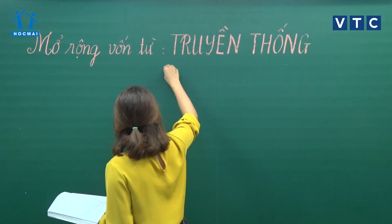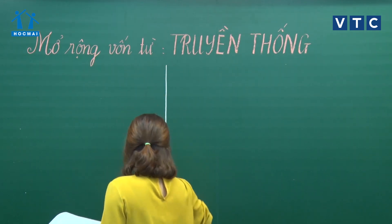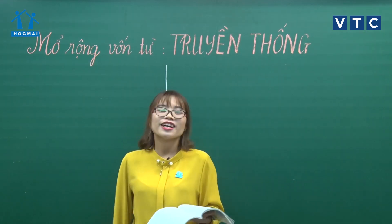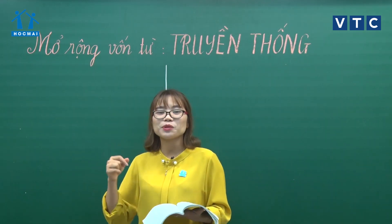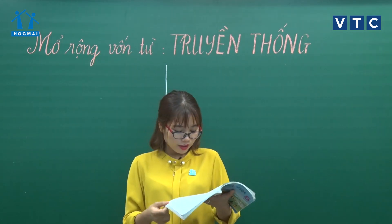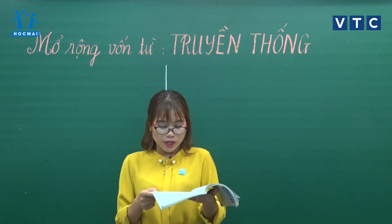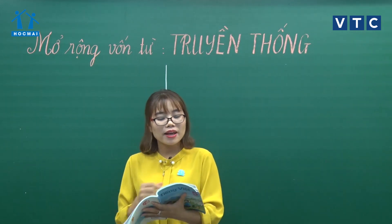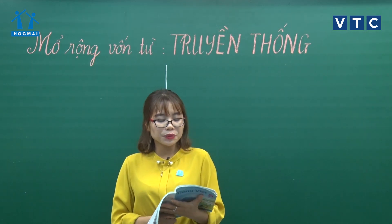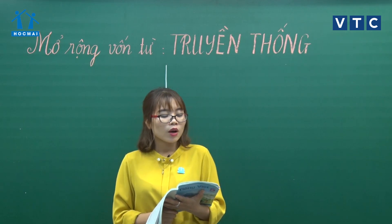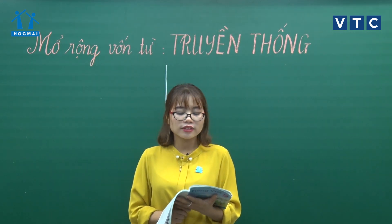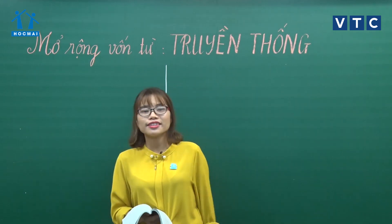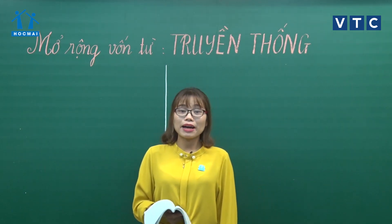Lấy vở ra nhé. Bài tập 1 cô sẽ không ghi lên bảng, các bạn dành một chút thời gian ghi lại tên bài học sau đó chuẩn bị sẵn sàng để ghi theo những gì cô Hoa đang hướng dẫn. Dòng nào dưới đây nêu đúng nghĩa của từ truyền thống? A. Là phong tục và tập quán của tổ tiên, ông bà. B. Cách sống và nếp nghĩ của nhiều người ở địa phương khác nhau. C. Lối sống và nếp nghĩ đã hình thành từ lâu đời và được truyền từ thế hệ này sang thế hệ khác.